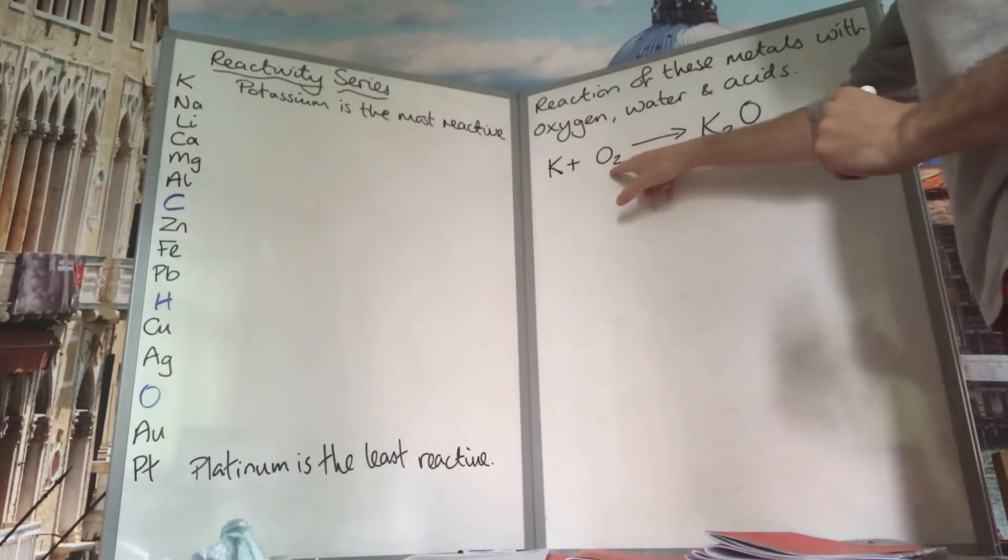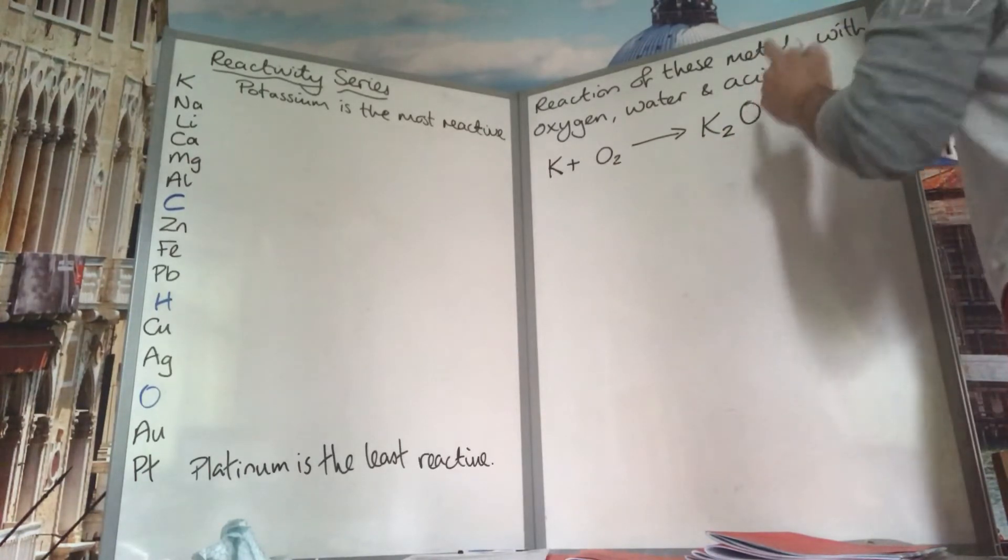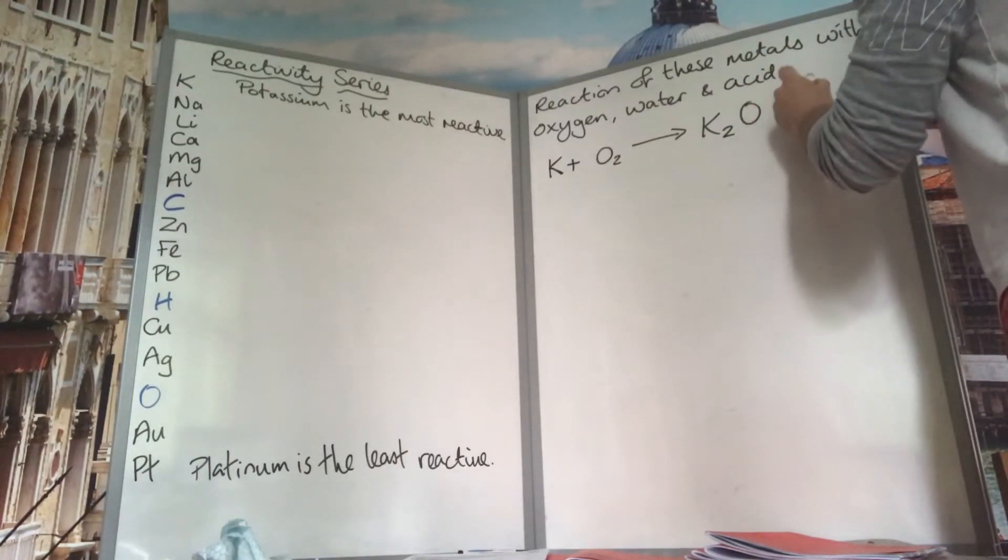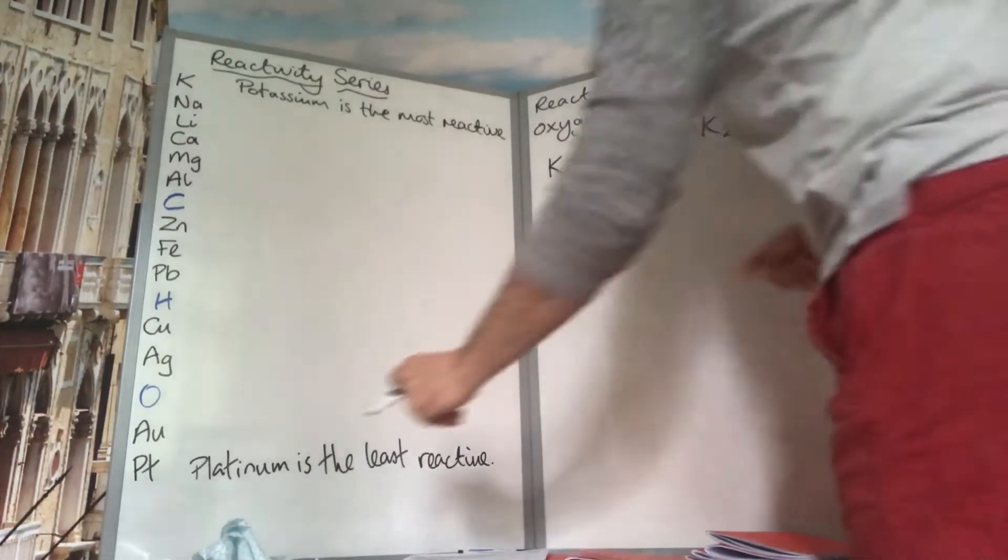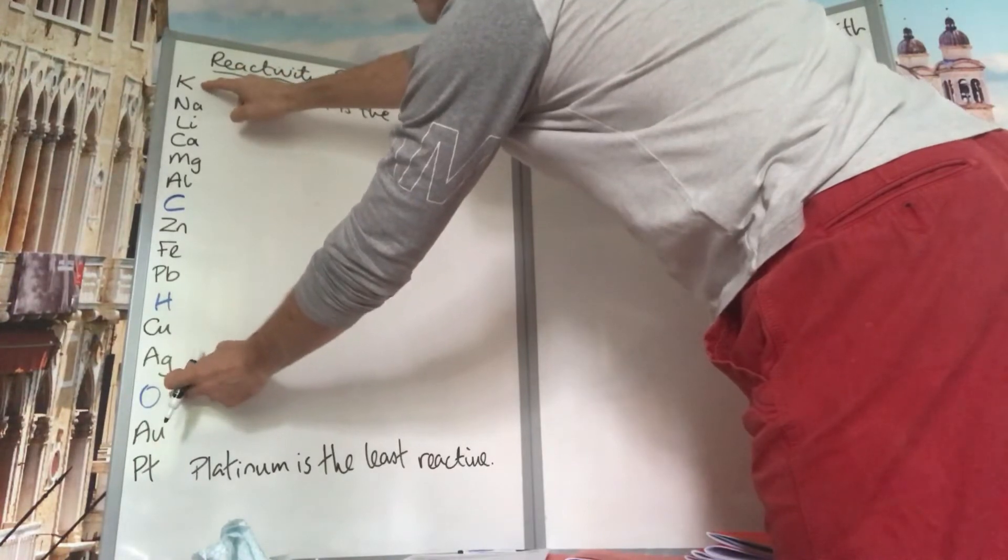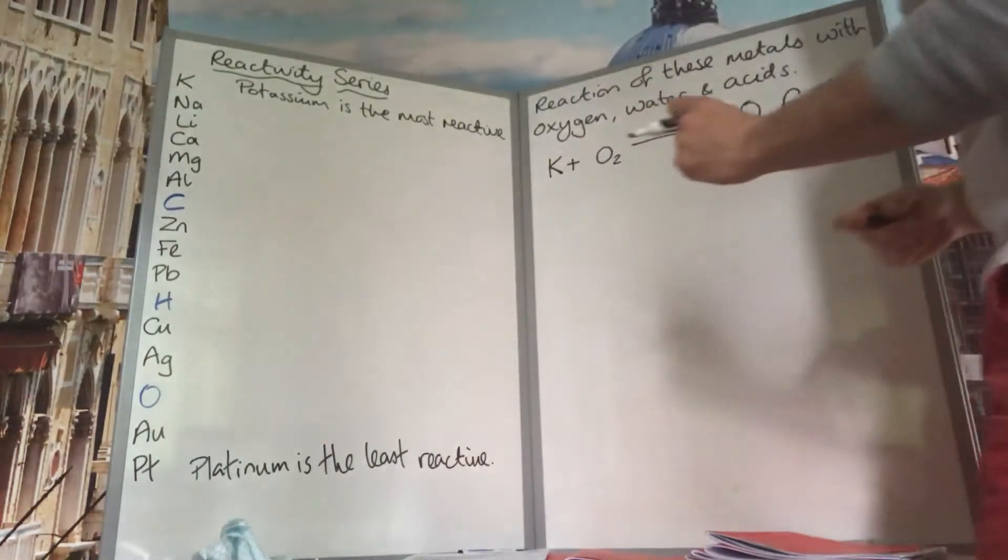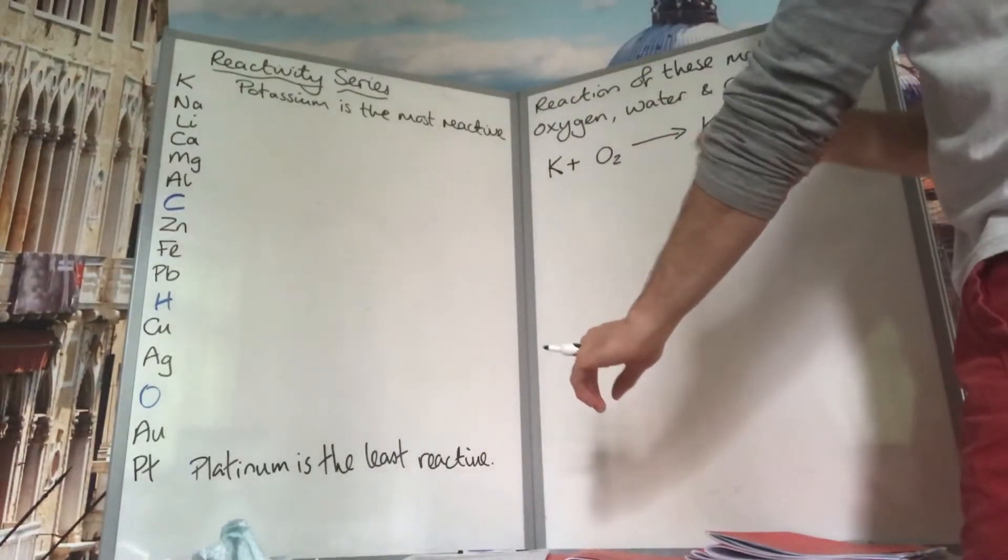If we start with potassium here being the most reactive, its reaction with oxygen produces potassium oxide. This reaction is really fast and we can tell that because of the distance between potassium and oxygen in the reactivity series. The bigger the difference in reactivity, the faster that reaction will be.